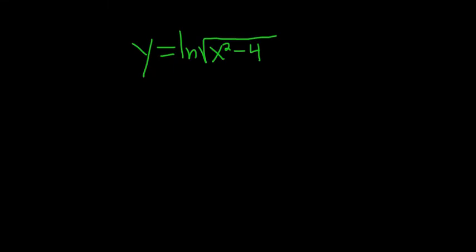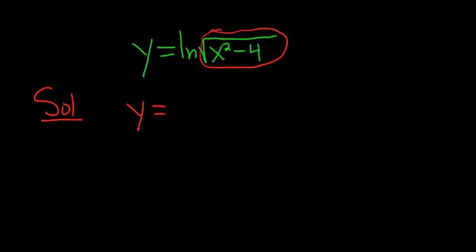Find the derivative of y equals the natural log of the square root of x squared minus 4. The first thing to do in this problem is to rewrite this, because if we just take the derivative it would be 1 over this stuff here times the derivative of this, and that is a mess.